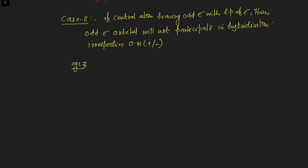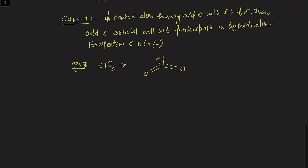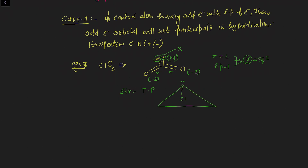Example number 3: ClO2. Drawing the Lewis dot structure of ClO2, out of 7 valence electrons chlorine uses 4 electrons and 3 electrons are left as an odd electron. The oxidation number of oxygen is minus 2 each, so chlorine has a positive oxidation number. If we went by case 1, we would include this odd electron in hybridization. But the actual rule is: since the odd electron is present along with a lone pair, this odd electron is excluded from hybridization. Sigma bonds: 2. Lone pair: 1. Steric number = 2 + 1 = 3. Hybridization is sp2, structure is trigonal planar, and shape is bent or V-shape or angular.